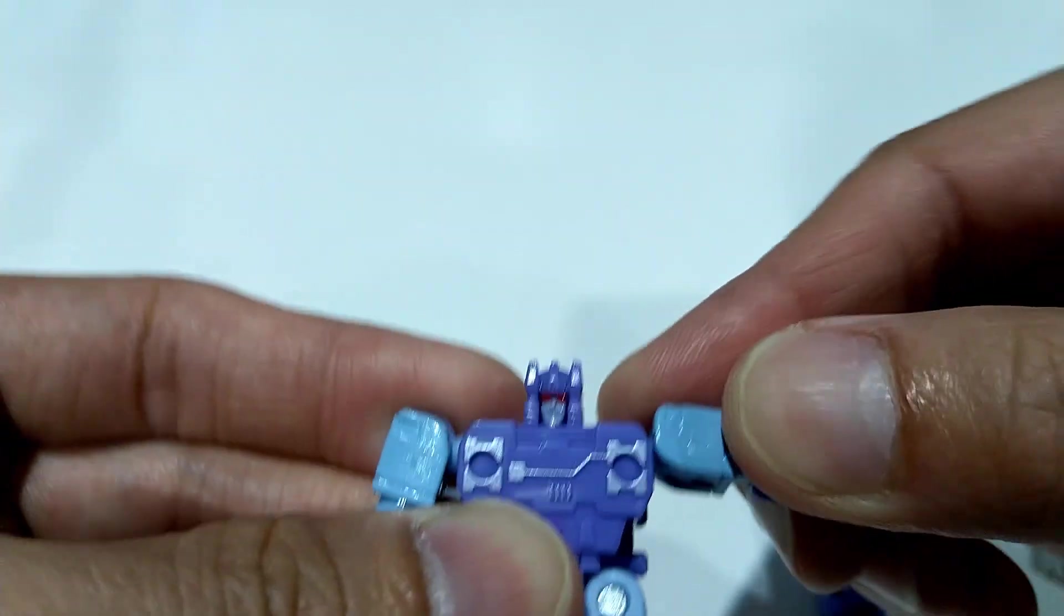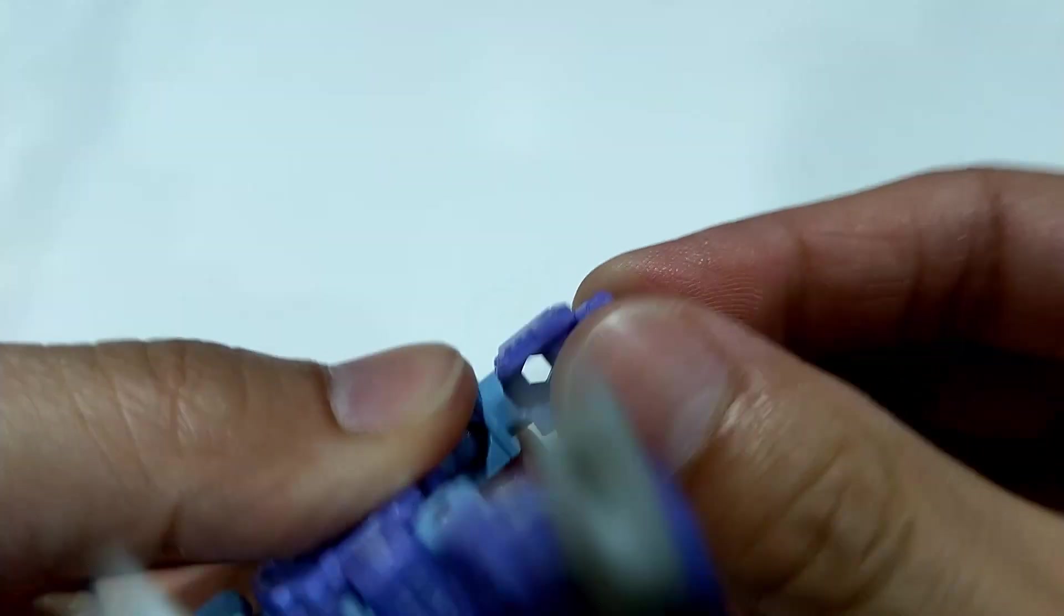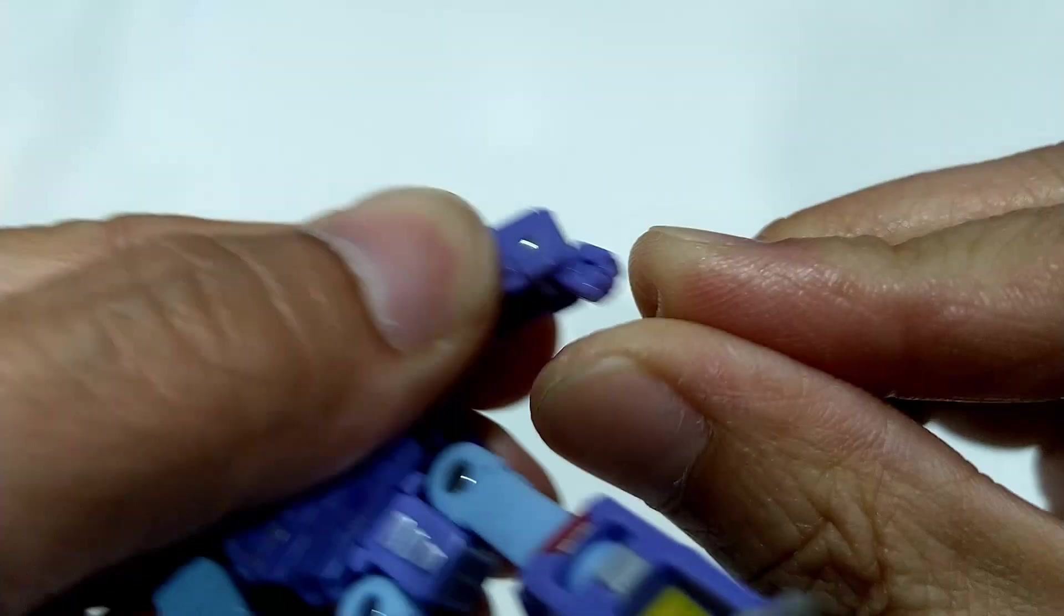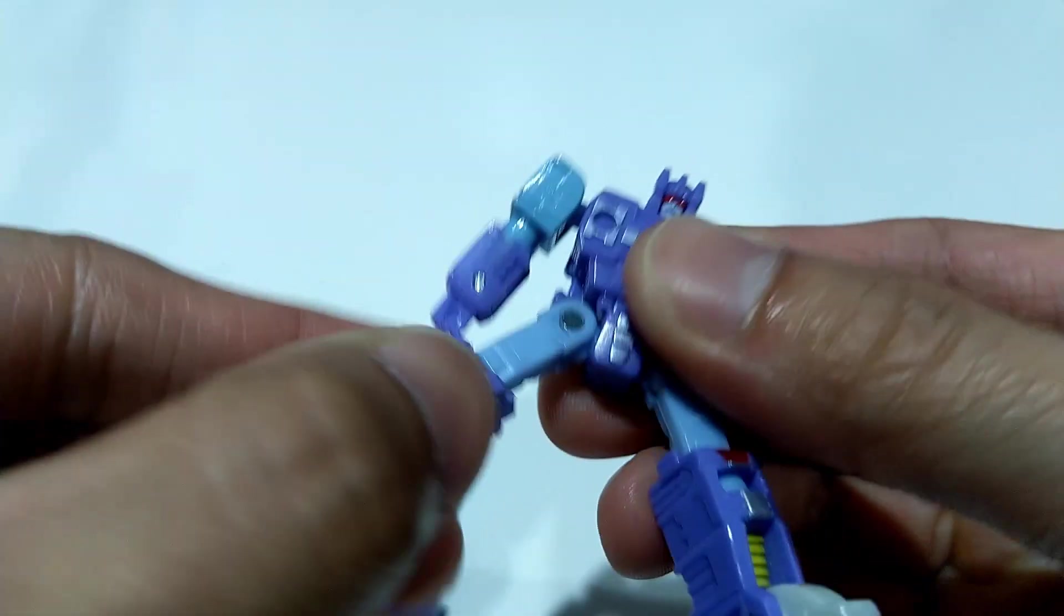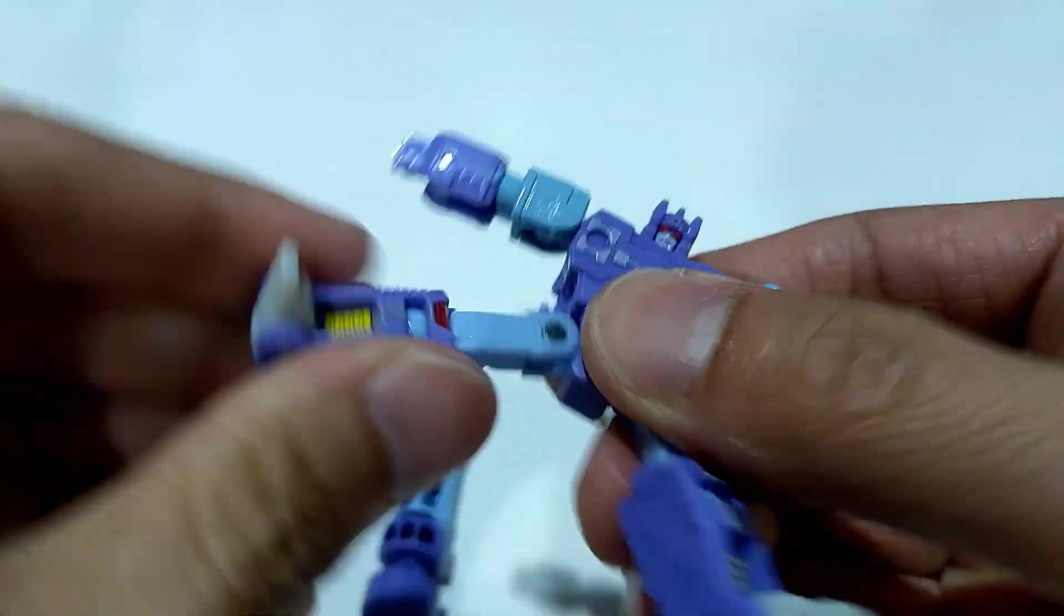You can swing forward 360. No elbow joints, although this does move in for transformation reasons.